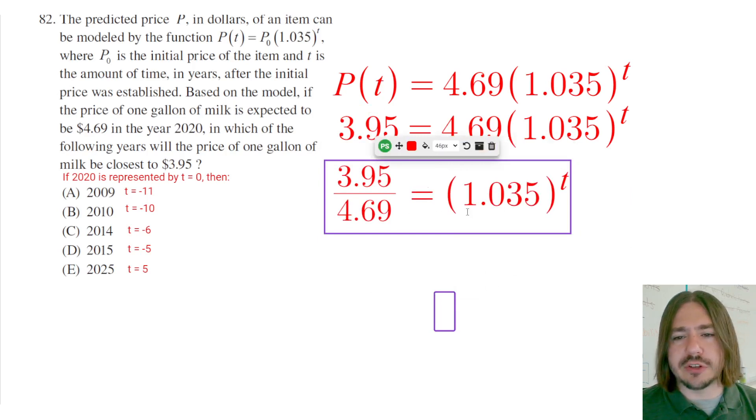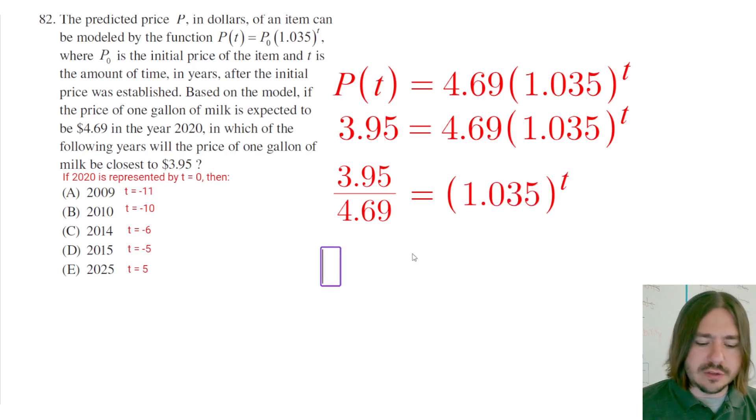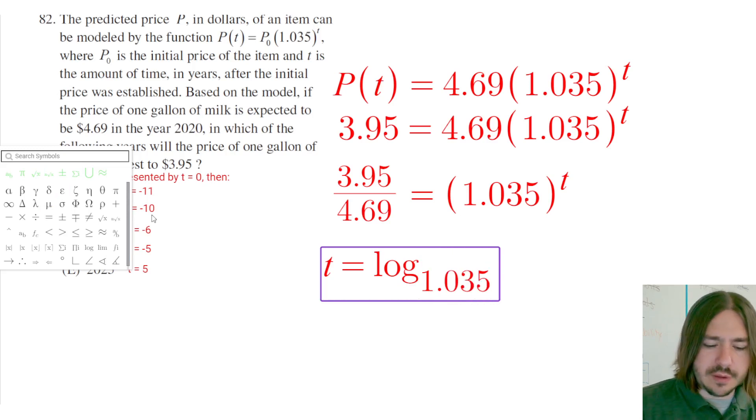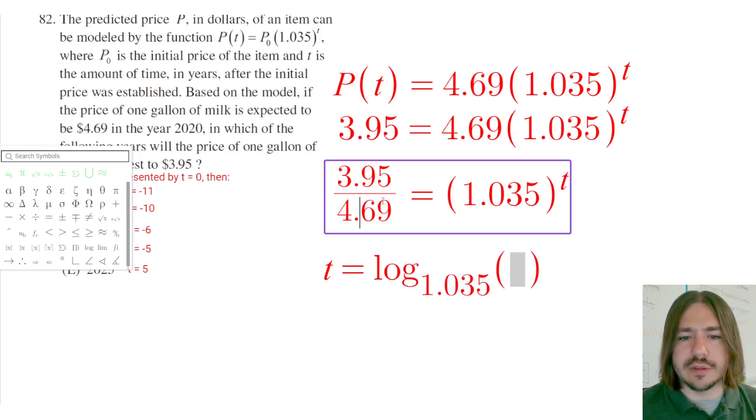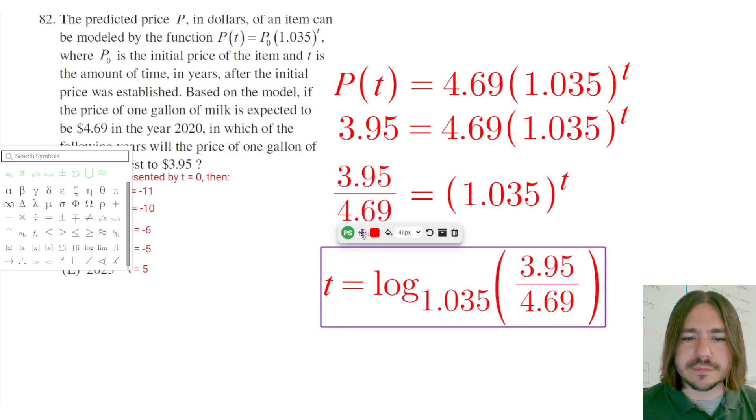So this is where I've got an exponential equation that I need to rewrite as a logarithm. Essentially, what I want to do is take the log base 1.035 of both sides, and that will isolate the t for me. So let's go ahead and rewrite this. t equals log base 1.035 of this fraction, and I'm not even going to bother typing this into the calculator until the very end.